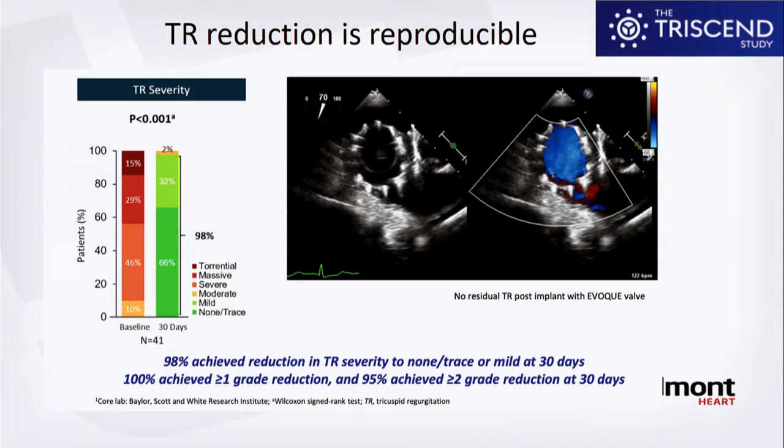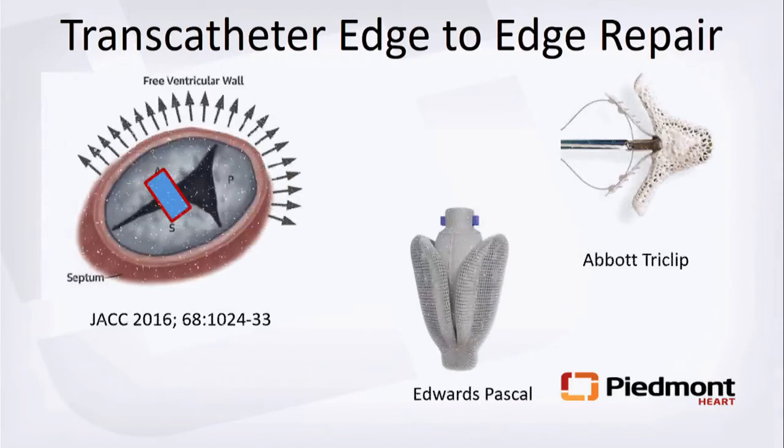TR reduction with EVOQUE is very reproducible. In the TRISCEND early feasibility study, 98% of the time you get none to trace TR at 30 days — very powerful therapy. However, it is not currently available; it's being studied in the pivotal TRISCEND 2 study, randomizing patients to tricuspid valve replacement versus optimal medical therapy with two-year endpoints. The trial is ongoing and expected to complete next year.